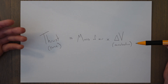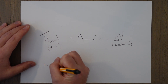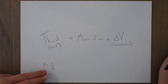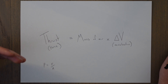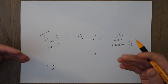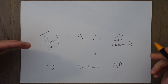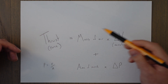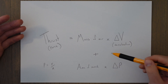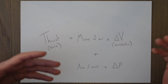When air exits the nozzle at the back of the engine it has a higher pressure than the surrounding air, which creates a force. Pressure equals force over area, so to find the thrust from this we multiply the pressure by the area — the output nozzle area at the back of the engine. So we add the area of the nozzle multiplied by the difference in pressure between the surrounding air and the output pressure of that nozzle. Our full thrust equation is: thrust = (mass flow × velocity change) + (nozzle area × pressure differential).